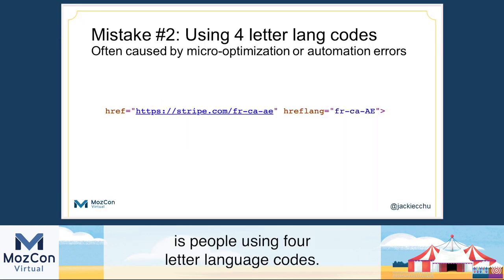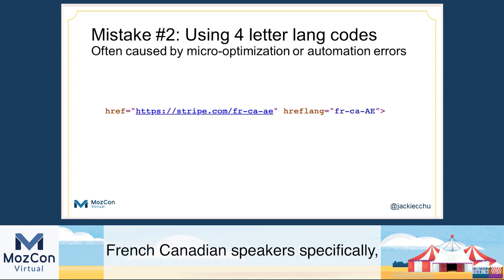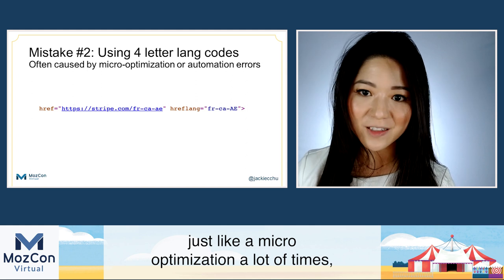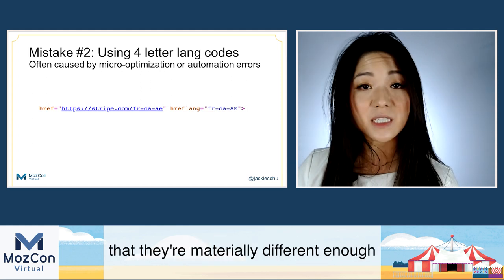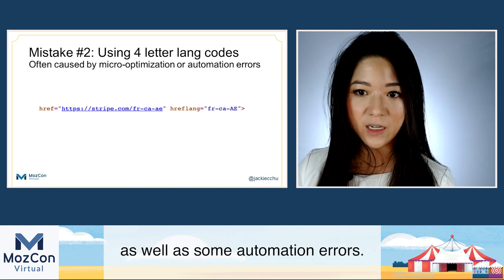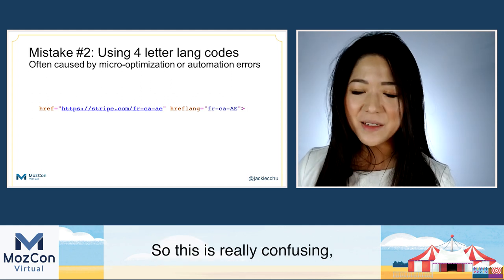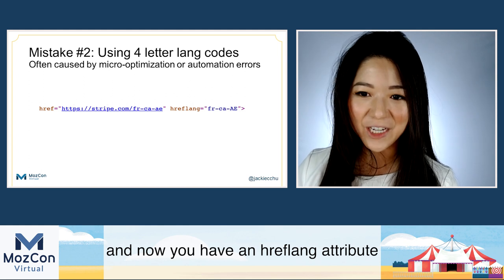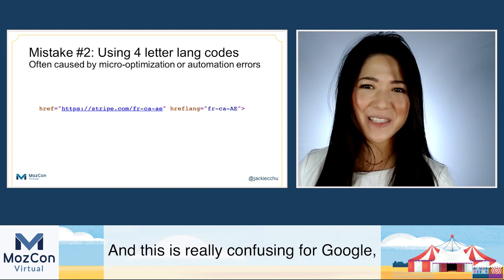Another really common mistake is people using four-letter language codes — rather than just targeting FR, they target French-Canadian speakers specifically, or Spanish speakers from Spain. Honestly, this is a micro-optimization a lot of the time. Google doesn't actually think they're materially different enough to rank the content differently, and it can create cannibalization issues as well as automation errors. Here we're looking at Stripe's homepage for French-Canadian speakers in the Arab Emirates — French-Canadian was saved as its own individual language, creating an hreflang attribute targeting French, Canada as a geography, and Arab Emirates, which is really confusing for Google and not valid.